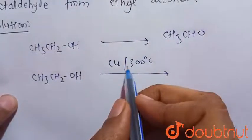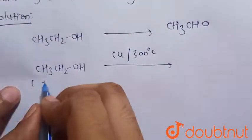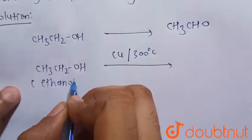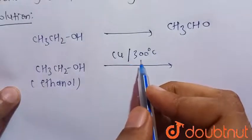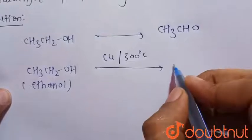This is a primary alcohol. So we know that when primary alcohol reacts with copper in presence of 300 degree Celsius temperature, it changes into the aldehyde.